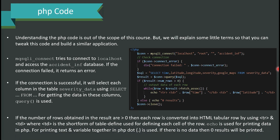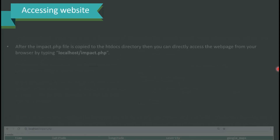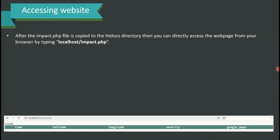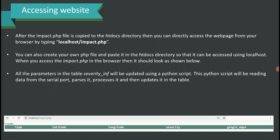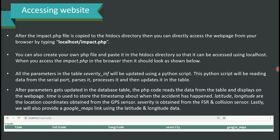'echo' is used for printing data in PHP, and a dot is used to concatenate text and variables. If there is no data, zero results will be printed. After the impact.php file is copied into the htdocs directory, you can access the webpage from your browser by typing 'localhost/impact.php'. You can also create your own PHP file and place it in htdocs to access it via localhost. All parameters in the severity_data table will be updated using a Python script.